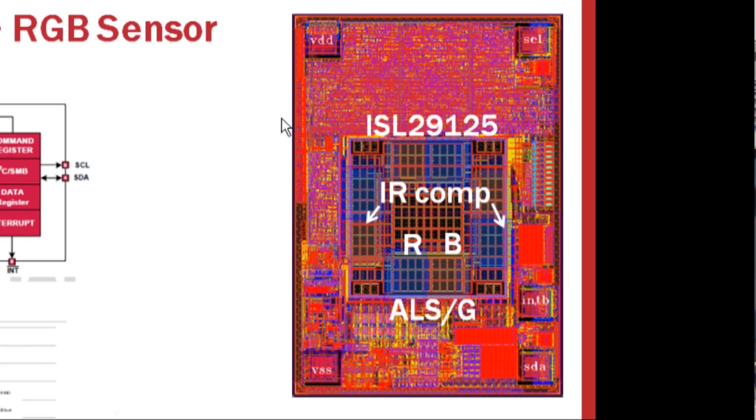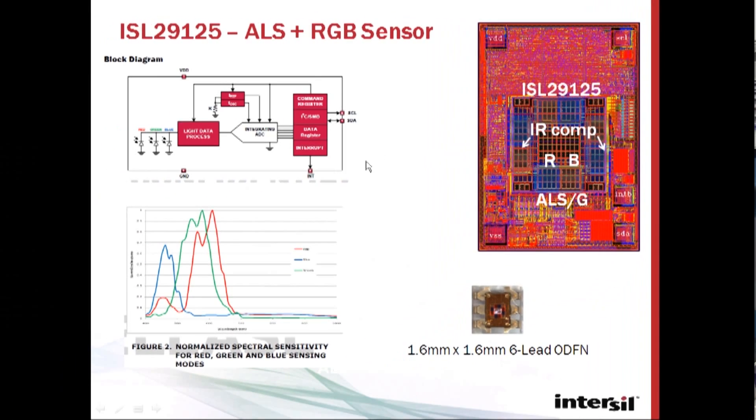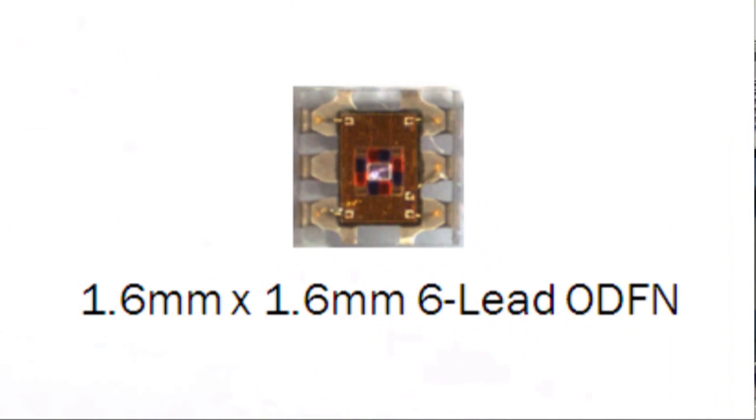The part comes in a very small 1.6 millimeter by 1.6 millimeter package, so it makes it very small. One of the applications might be on a cell phone, for example. You may want to do white balancing for the camera, or you may want to adjust the contrast or color of the display based on the light in the room or the color temperature of the room.